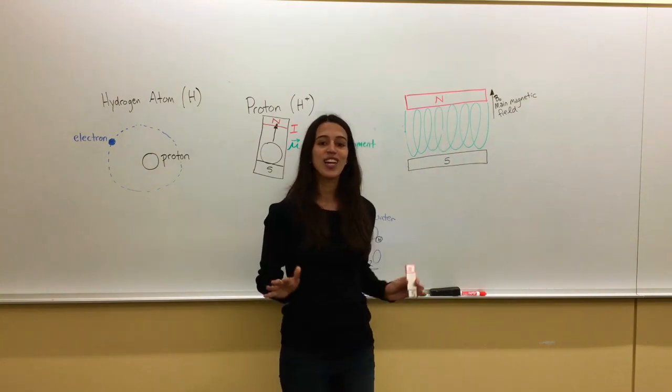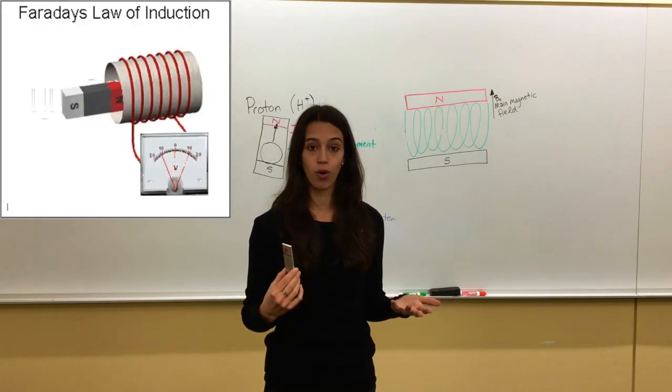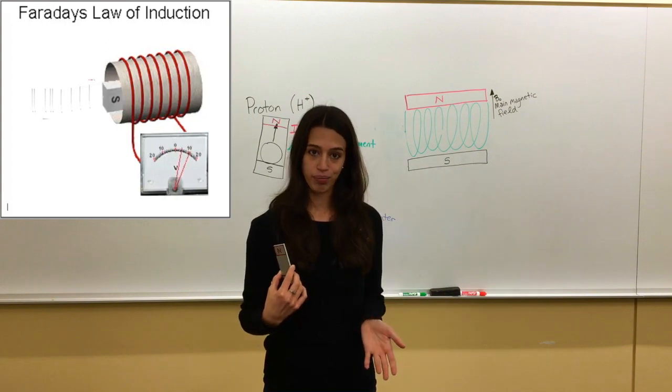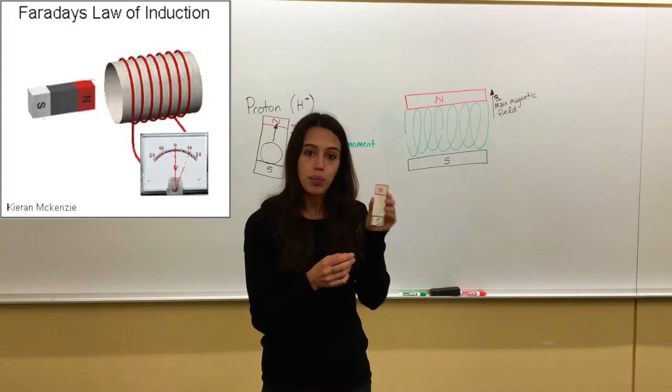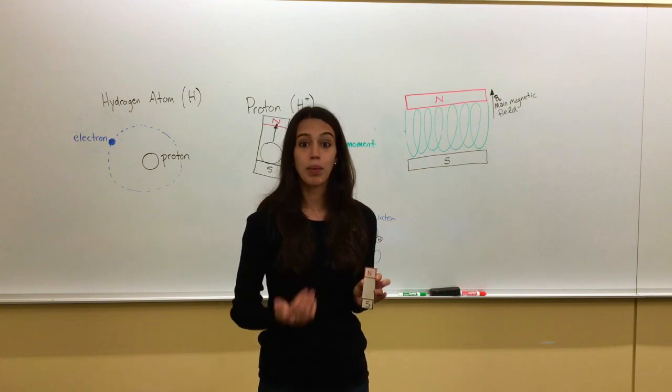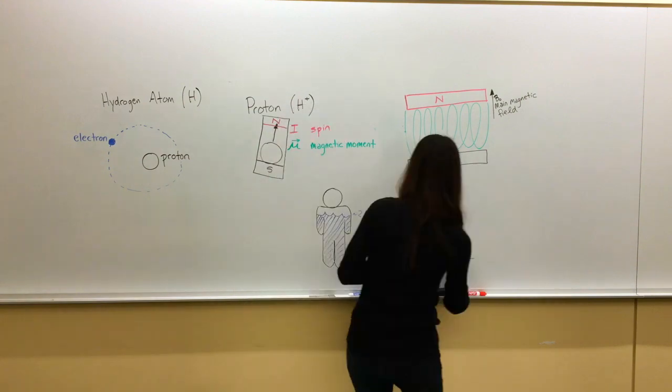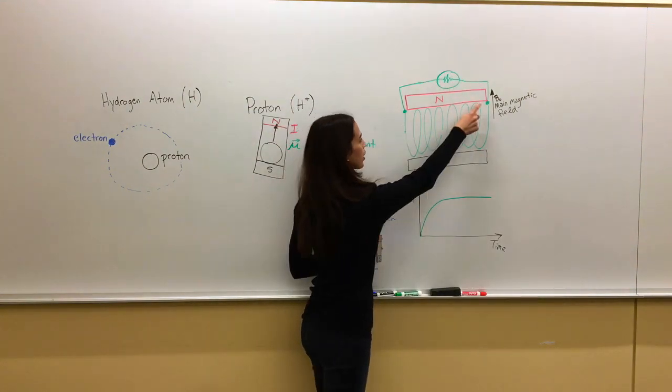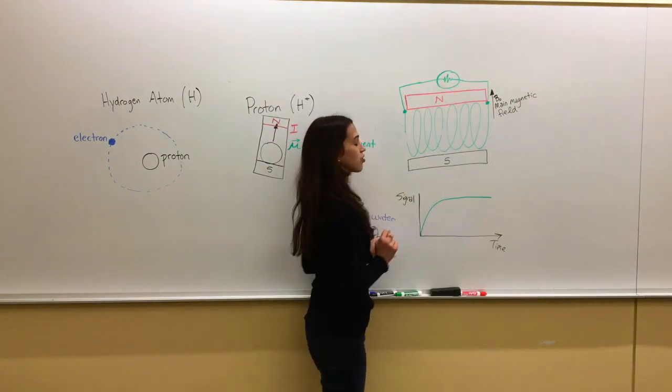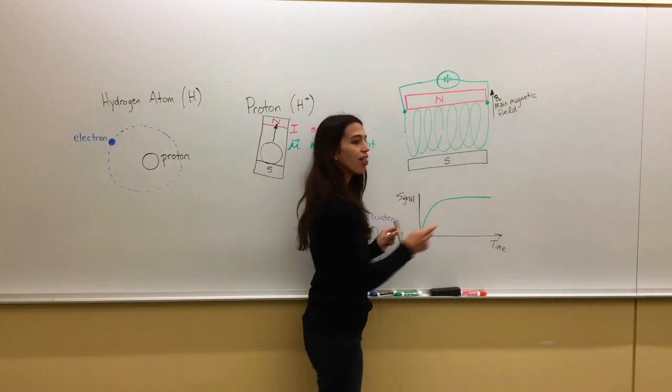Now from Faraday's law of induction, we know that anytime we have a magnet moving within a coil, we induce voltage in that coil. Because this little proton is moving within this coil, we can actually pick up a voltage from it. And it looks something like this. If we measure what's going on in this coil, the signal is going to look something like this.